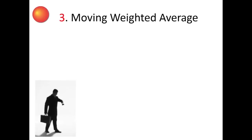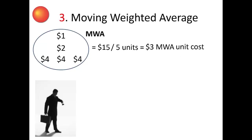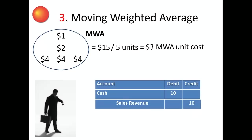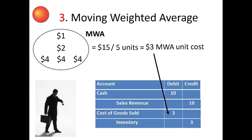Under Moving Weighted Average, just before each sale, management takes the total cost of all inventory on hand — $15 — and divides it by the total number of units on hand — 5 units — to arrive at a weighted average unit cost of $3. That weighted average unit cost becomes the unit cost of the first goods sold out. Debit cash $10; credit sales revenue $10; debit cost of goods sold $3, which is the average cost of the one unit sold; and credit inventory $3, reducing it.